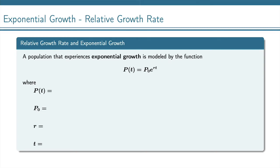Exponential growth can be modeled using a relative growth rate — a rate that tells us how fast we're growing relative to the current population. When we model it like this, we have this formula, which you should recognize as a continuously compounded interest formula, because that's really what's happening here. A population growing exponentially can be thought of as growing as a percentage of its own size, just like a sum of money growing at a certain interest rate.